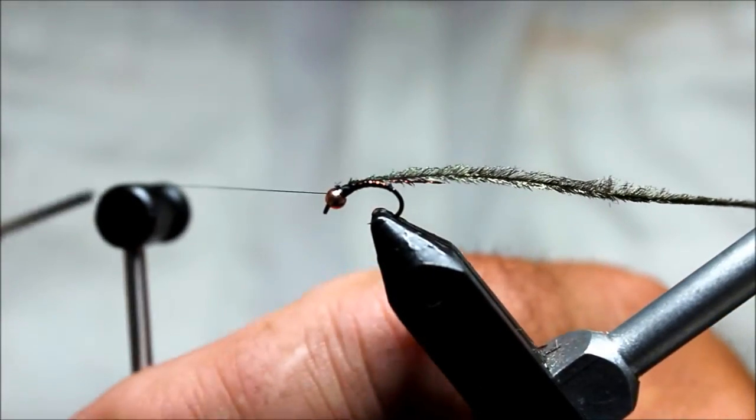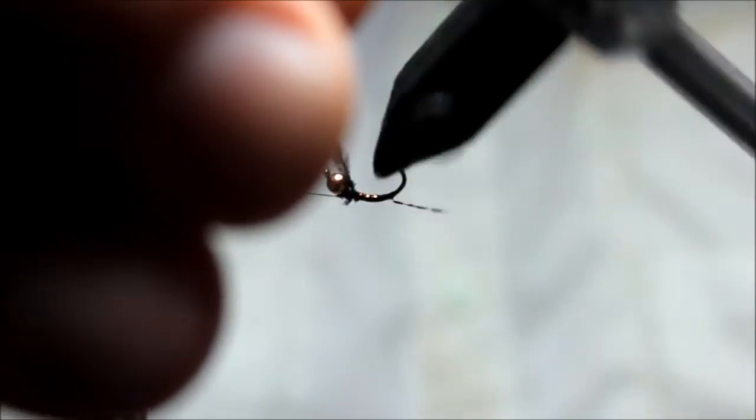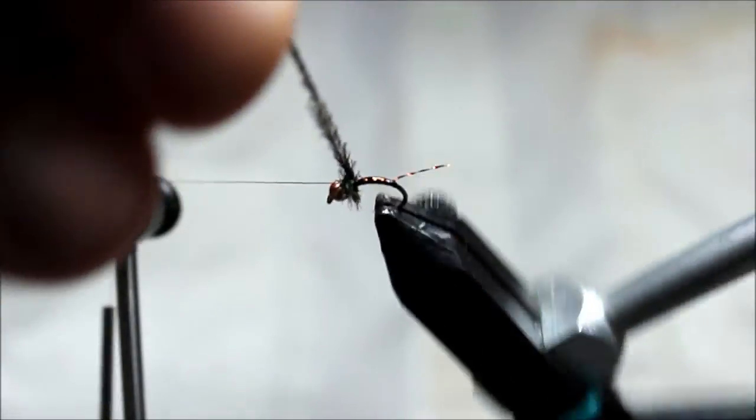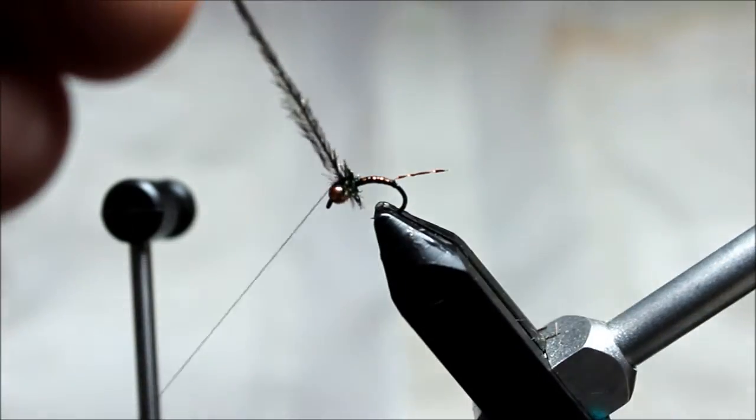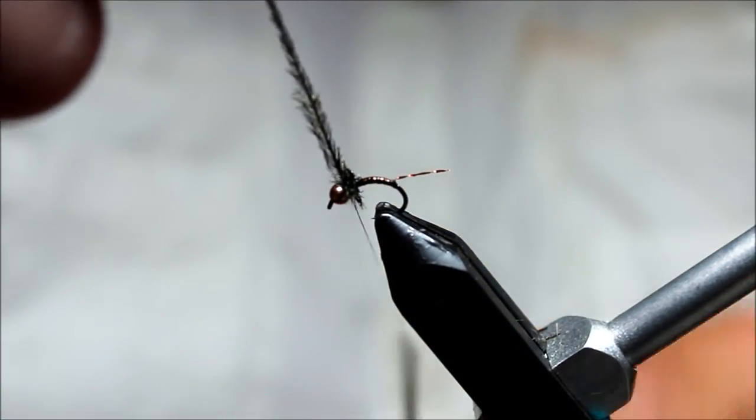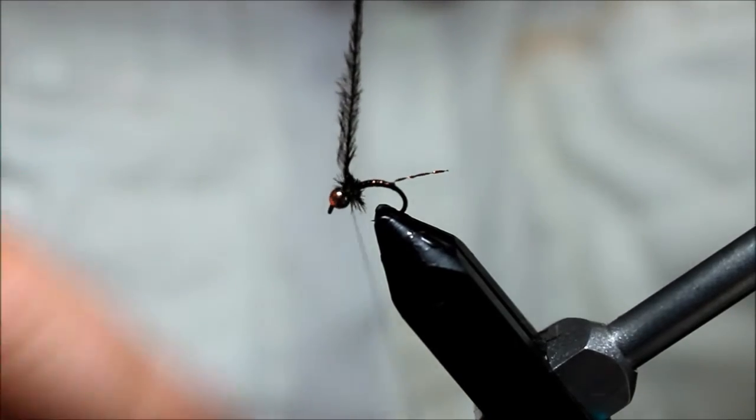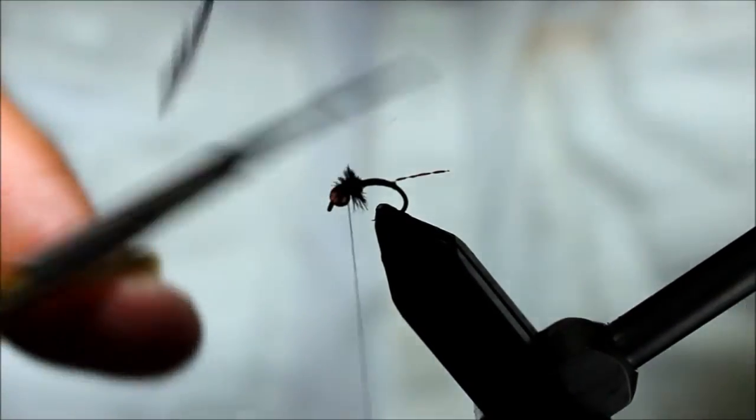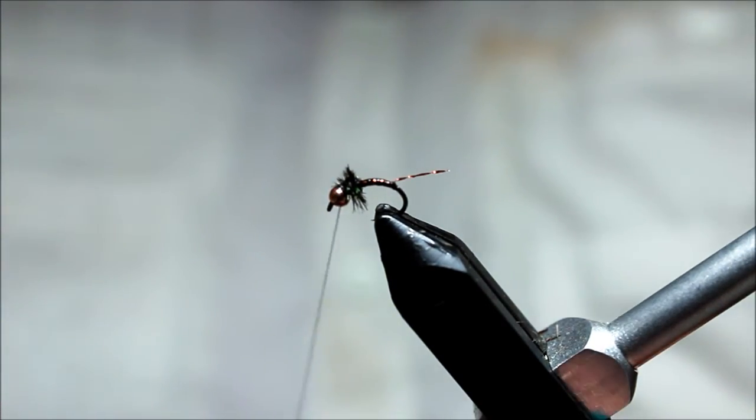I think the fuzziness of the hurl gives a great gill effect. You can tie that with or without the tail that I've added; I do find it tends to fish better with that addition a majority of the time.